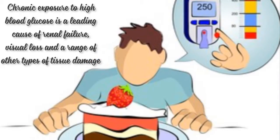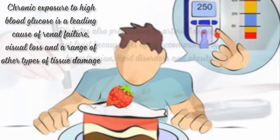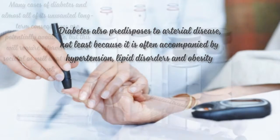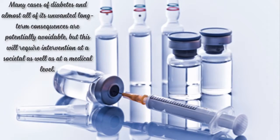Chronic exposure to high blood glucose is a leading cause of renal failure, visual loss, and a range of other types of tissue damage. Diabetes also predisposes to arterial disease, not least because it is often accompanied by hypertension, lipid disorders, and obesity. Many cases of diabetes and almost all of its unwanted long-term consequences are potentially avoidable, but this will require intervention at a societal as well as at a medical level.